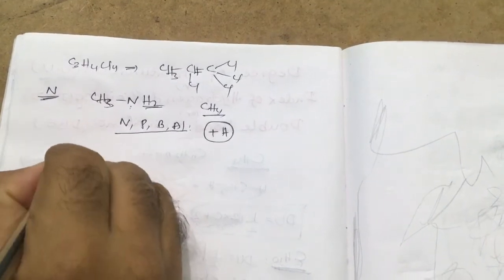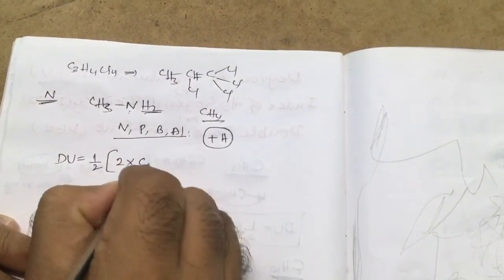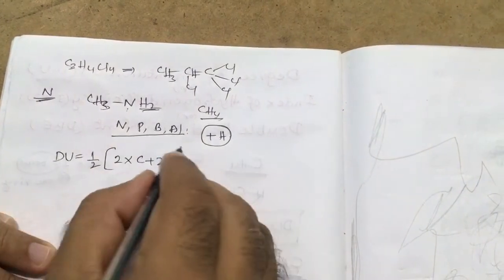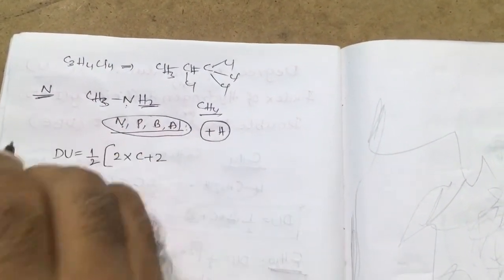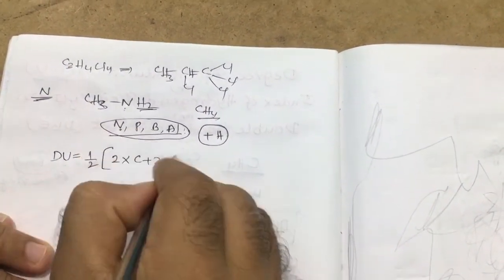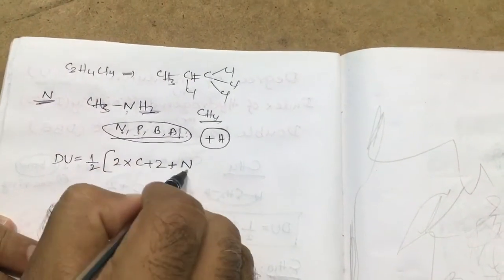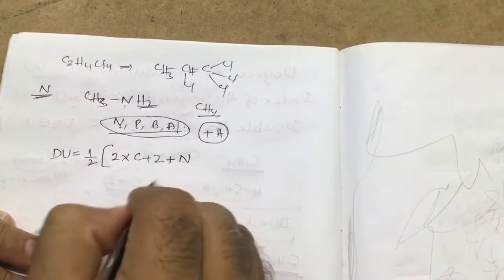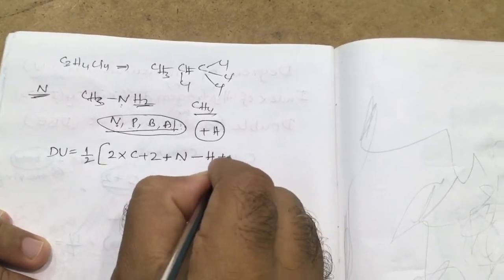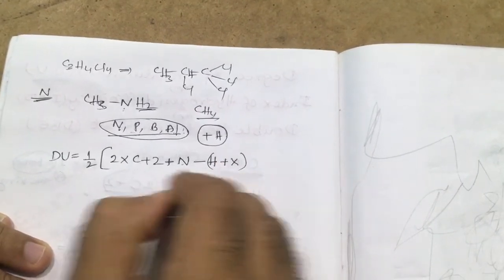Therefore, when trivalent atoms are present, the formula becomes: DU = ½(2C+2 + N − H − X), where N is the number of trivalent atoms (like nitrogen) which increase hydrogen by one, H is the actual number of hydrogens, and X is the number of halogens if present. If no halogen, we omit X.